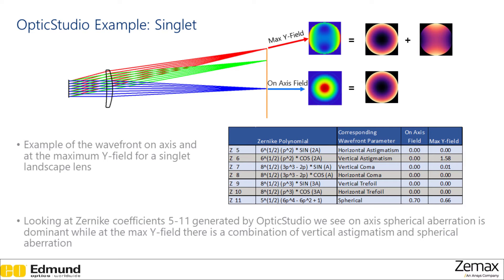Here's an example from Optic Studio showing how Czernicke polynomials can account for aberrations in an optical system. If we look at the focusing of the rays on axis in a wavefront measurement taken in Optic Studio, we can correlate this to a Czernicke polynomial. Additionally in Optic Studio, you can open a spreadsheet that gives you a description of the various Czernicke polynomials contributing to the aberrations. On axis, we see that the Czernicke polynomial that contributes the most is spherical aberration. If we move off axis higher up in the field, the wavefront measurement changes and can be described as a sum of a couple Czernicke polynomials — a combination of spherical and vertical astigmatism with a little bit of coma.